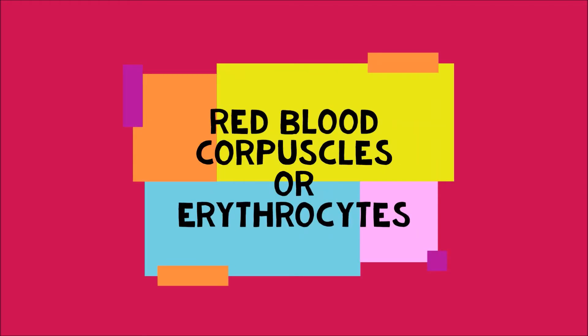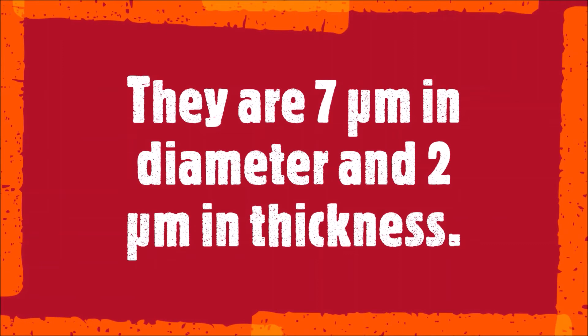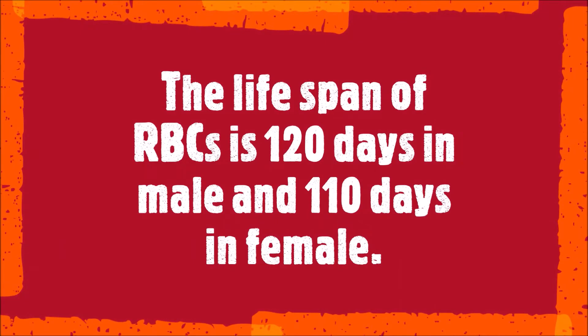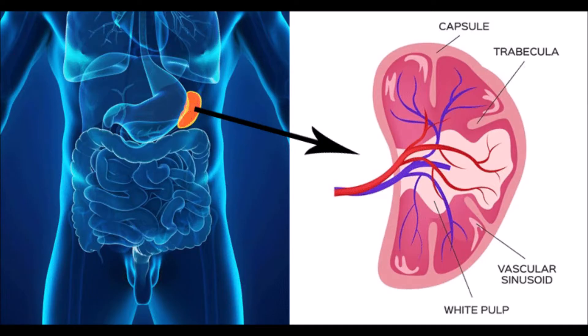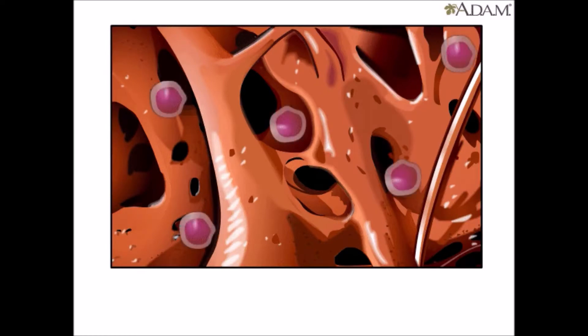Red blood corpuscles, also called erythrocytes, are circular biconcave non-nucleated cells rich in the iron-containing red pigment called hemoglobin. They are 7 micrometers in diameter and 2 micrometers in thickness. The lifespan of RBCs is 120 days in males and 110 days in females. Since red cells disintegrate in the spleen, the spleen is called the graveyard of RBCs. When we donate blood, the loss can be replenished quickly by bone marrow, so bone marrow is sometimes called the blood bank of the body.